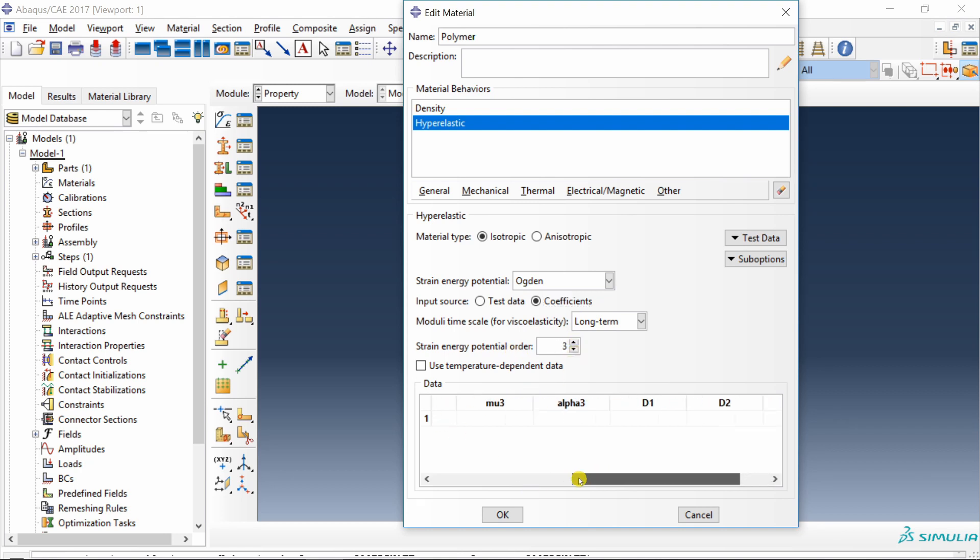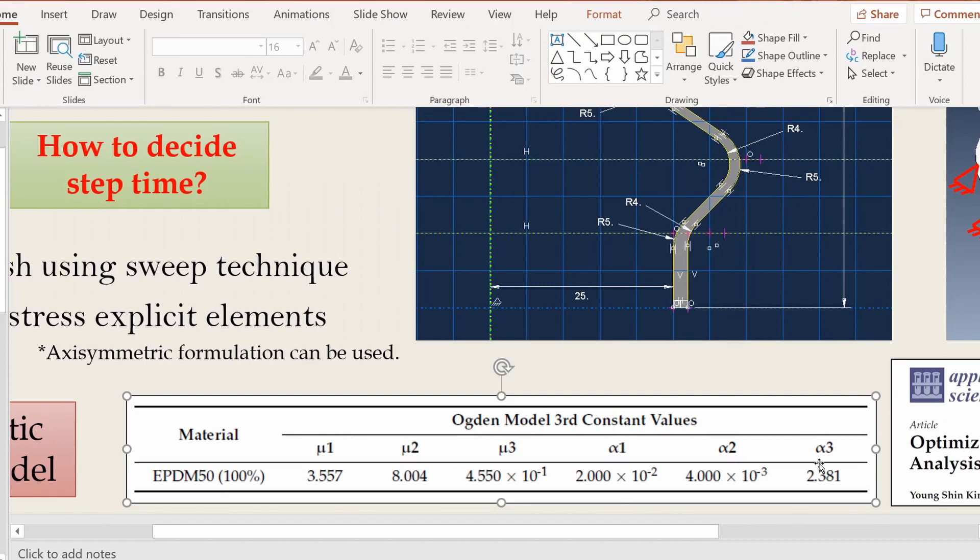And then go into mechanical elasticity and hyper-elastic. Here choose strain energy potential as Ogden and input source as coefficients. Increase the strain energy potential order to 3.